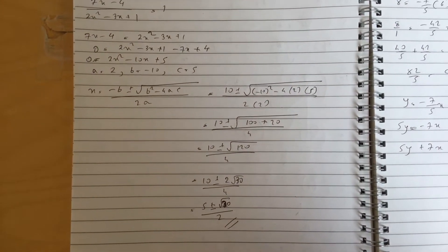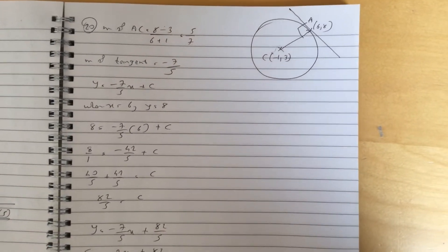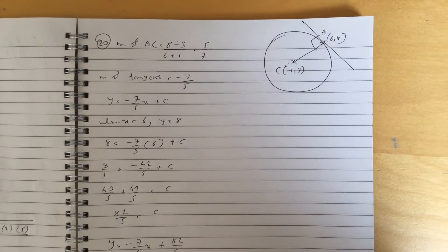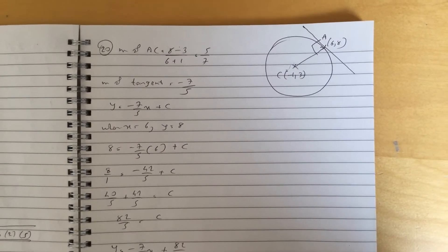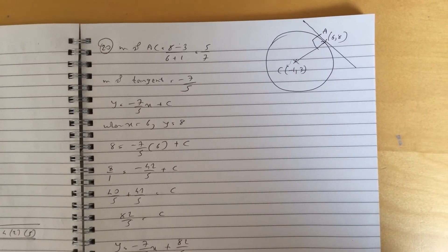Okay, question 20. This is a nice question actually. It's a question a lot of schools have left out this topic in the syllabus, but it's very important that you practice this. Gradient of AC, which is a radius, that is 8 minus 3 over 6 minus minus 1, which is 6 plus 1, so it'll be 5 over 7.